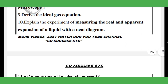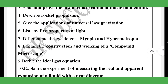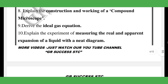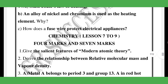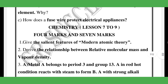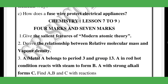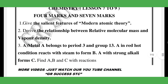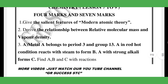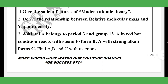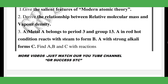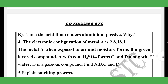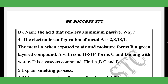Overall, these questions come from the four-mark and seven-mark categories. For chemistry four-mark and seven-mark: give the salient features of modern atomic theory, relative molecular mass and vapour density, metal A belongs to period 3 — find A, B, C. Name the acid that passivates aluminium.